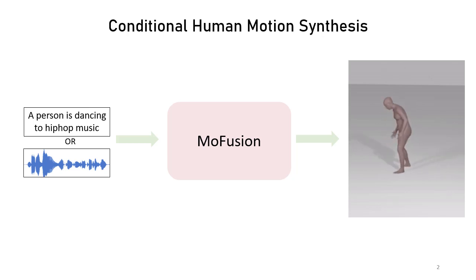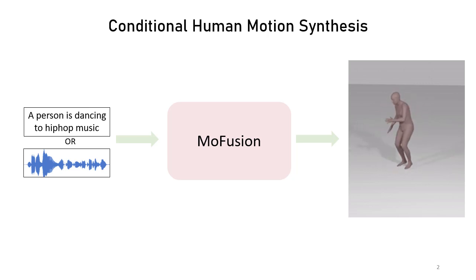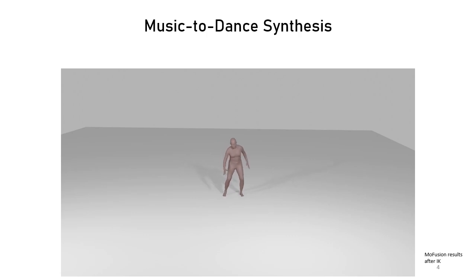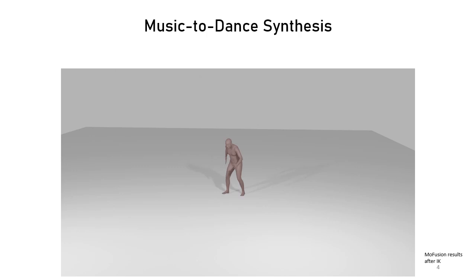Our motion synthesis framework can be conditioned on several input modalities, such as music or text. For example, let's consider these dance motions. These dance motions have been synthesized by the proposed MoFusion framework with music as the conditioning input. Similarly, MoFusion can also be trained to synthesize human motion based on text prompts like these.